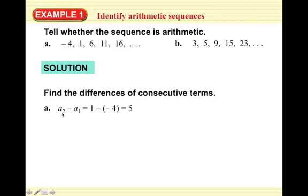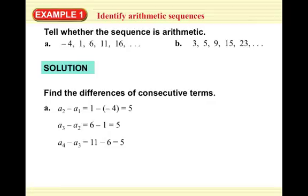The common difference is found by doing A2 minus A1. If we add 5 to the first term, that's how we get to the second: -4 plus 5 is 1, 1 plus 5 is 6, 6 plus 5 is 11. Whenever we do a term minus the previous term, we get 5 — that's called the common difference. So this is an arithmetic sequence with a common difference of 5.